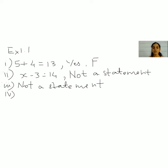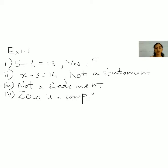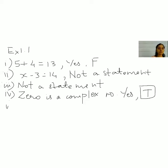The fourth one: zero is a complex number. Yes, it is a statement. Its truth value is true.